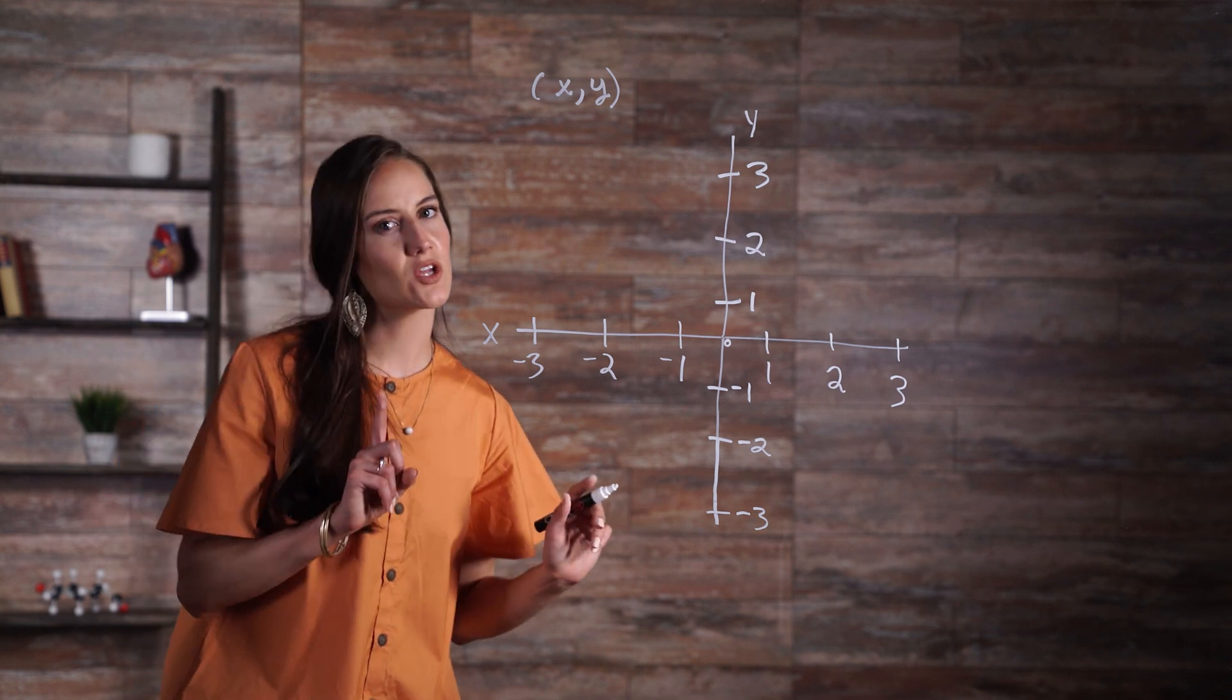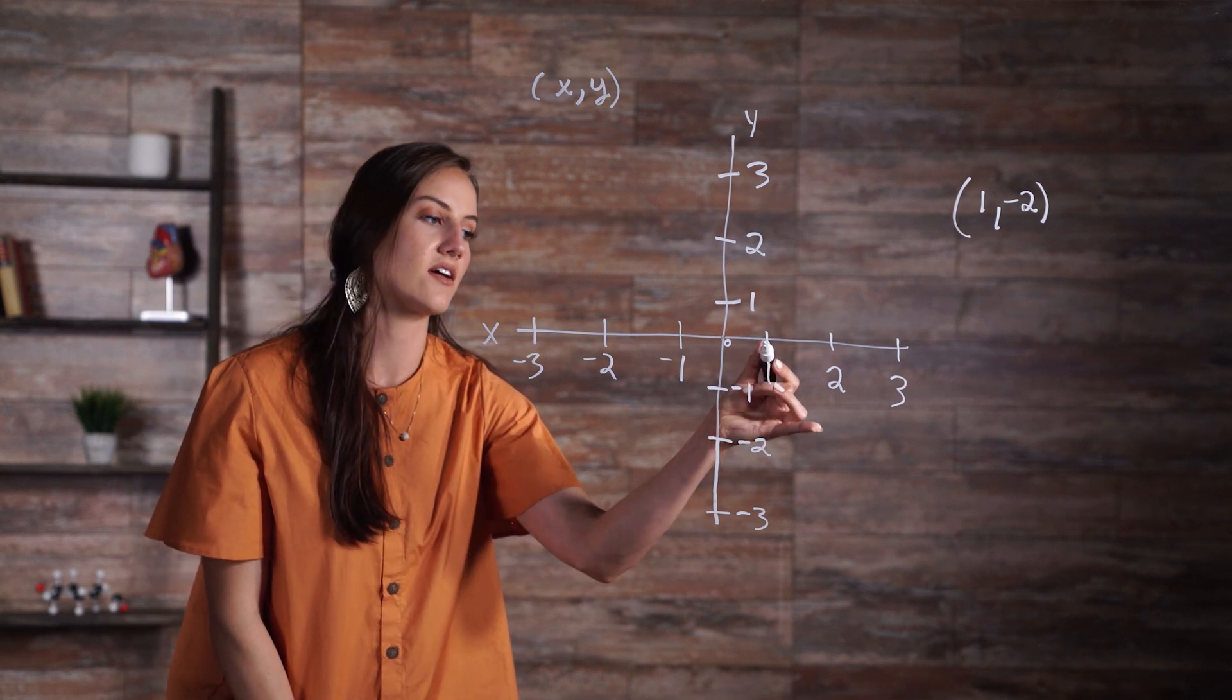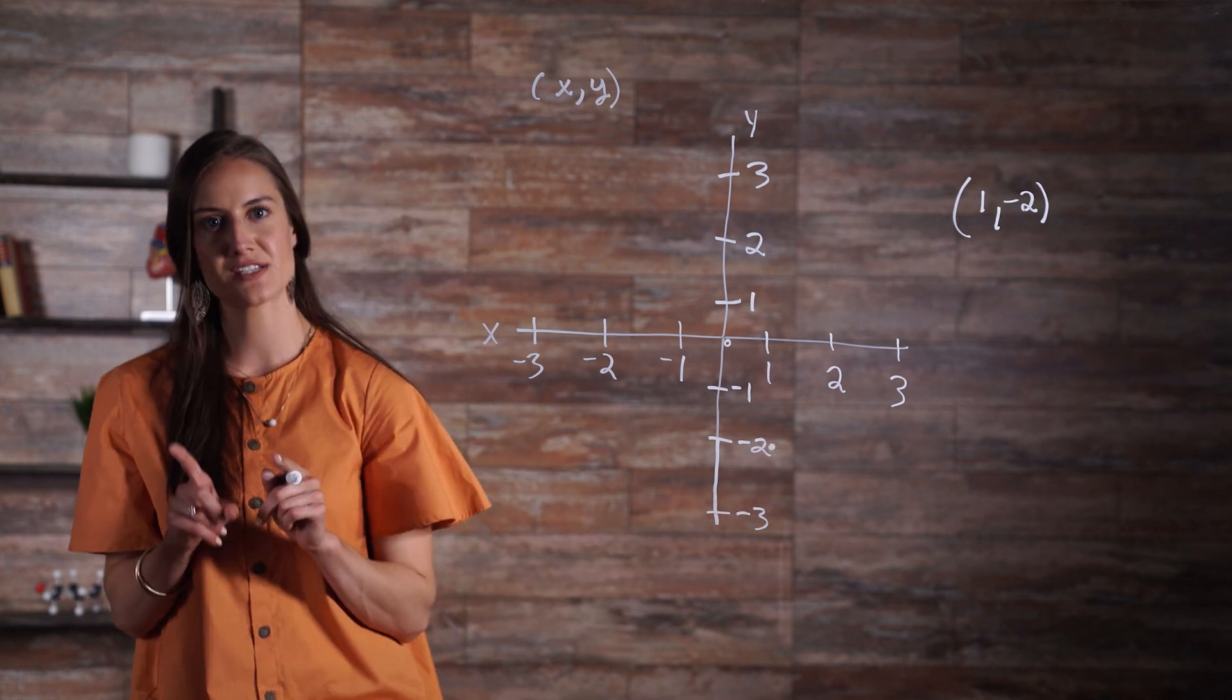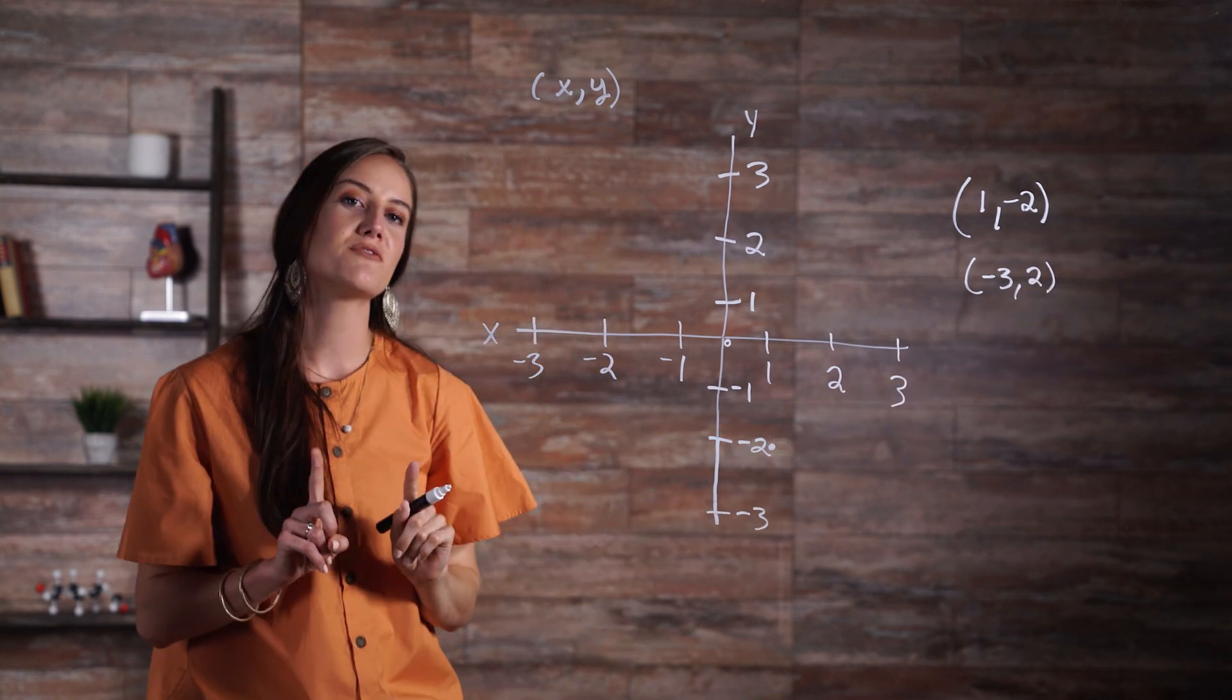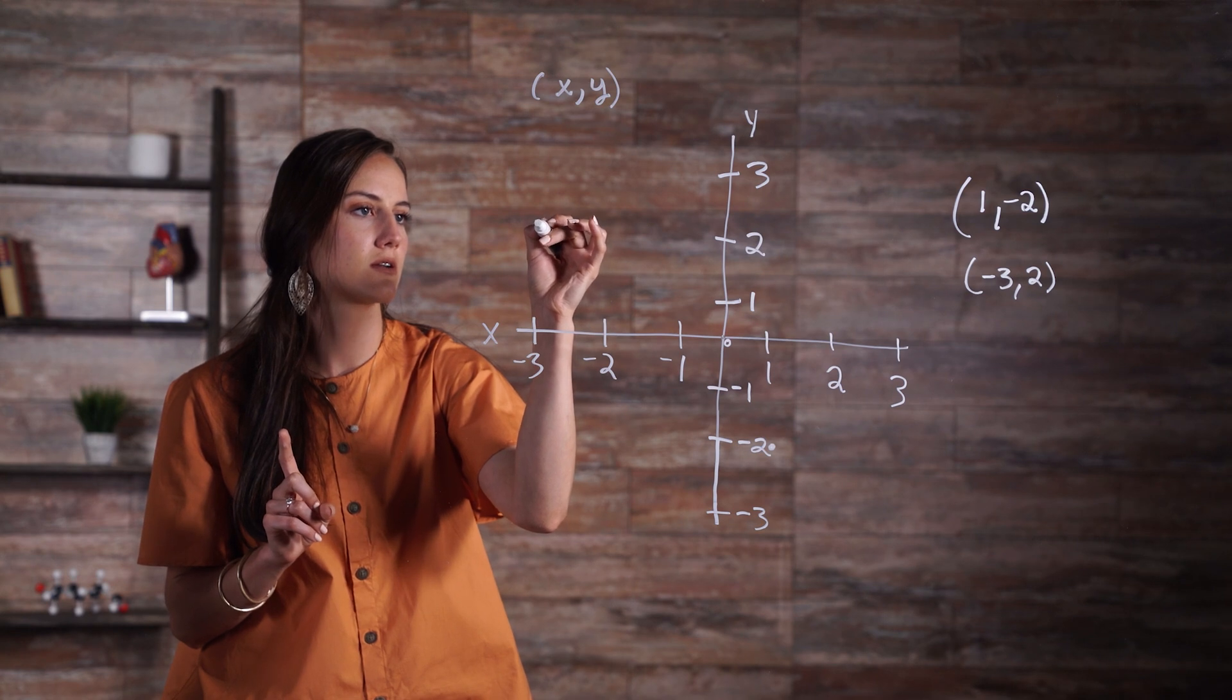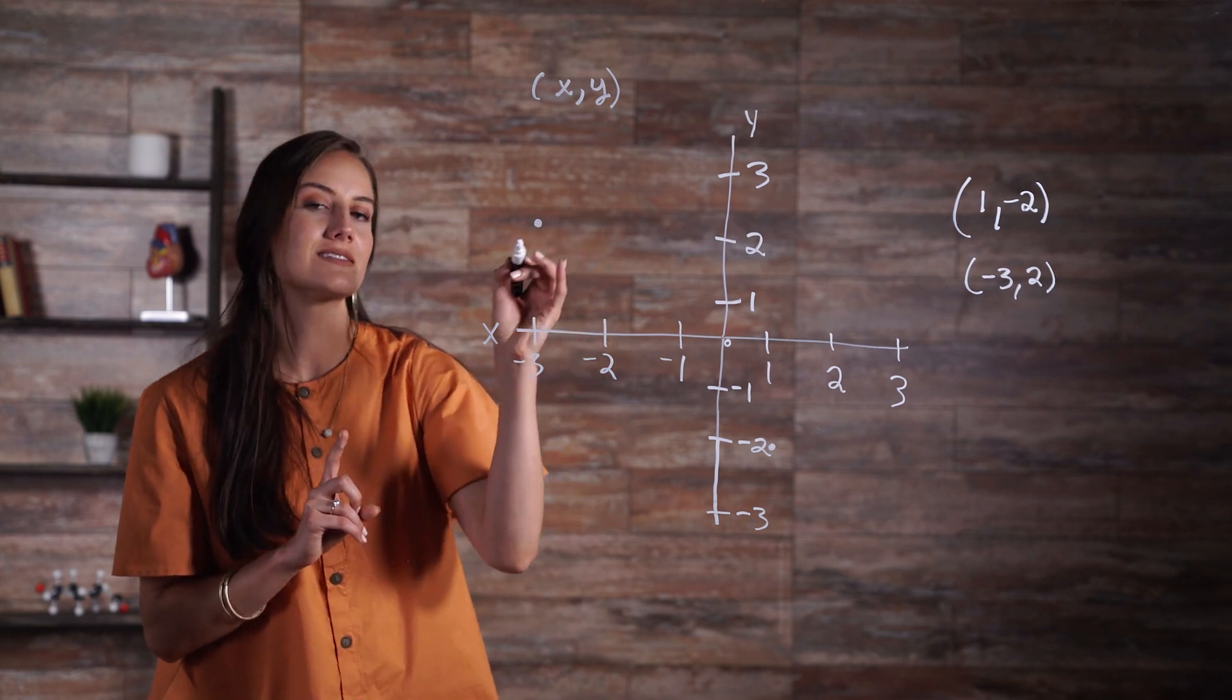To bring it all together, let's look at some examples. Say you were given the coordinates of a point. Our first step would be to find 1 on the x-axis, then go down to the value on the y-axis. Then we mark our point. It's important to note that our first point is located on the fourth quadrant, whereas our second point is located in the second quadrant.